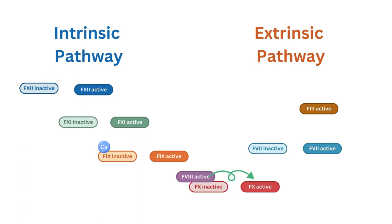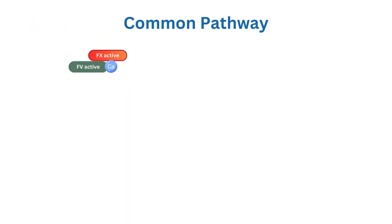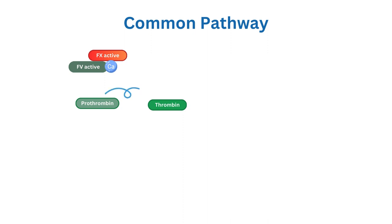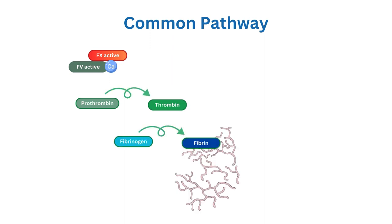Both pathways can be activated independently, but they often work together to ensure efficient blood clotting. The goal of the common pathway is to form a stable blood clot. Activated Factor 10, along with Factor 5 and calcium ions, form the prothrombinase complex. The step where fibrinogen is transformed into fibrin is where the meshwork of the blood clot is formed.